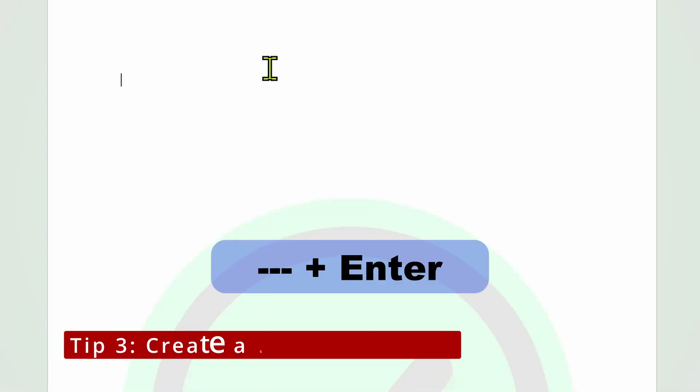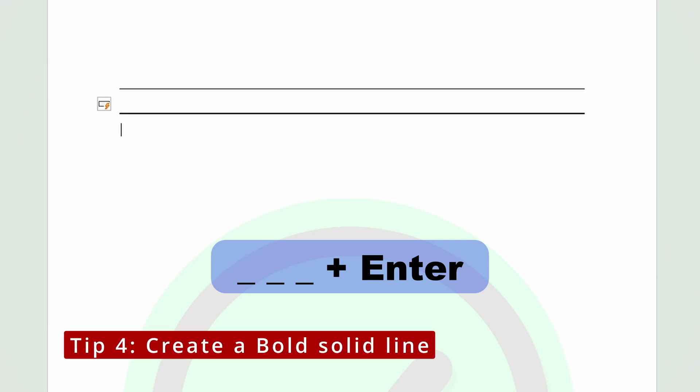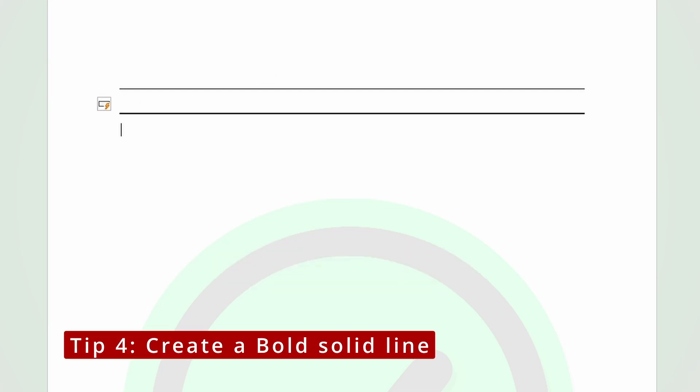If you press the dash sign or the minus sign three times, and then you press enter, it should create a solid single line. If you now press an underscore three times, and then you press enter, it should create a bold single line.